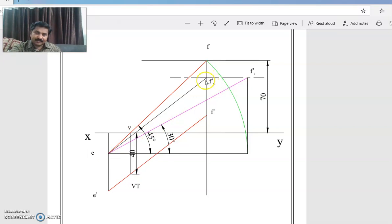Now vertical trace is 40mm below is given. So since this point, that means EF cuts the XY line at this point B.